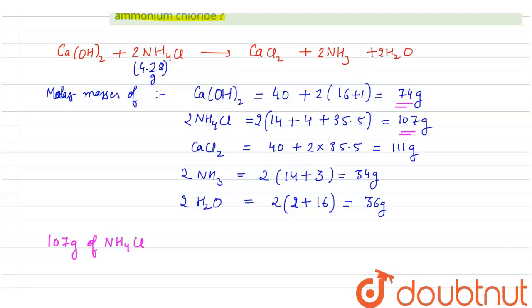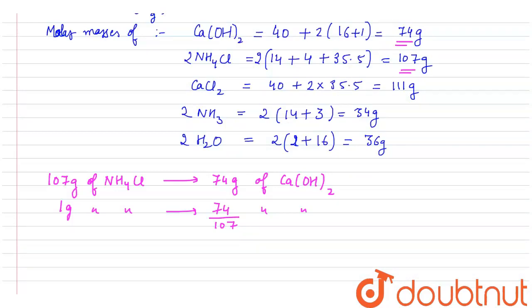So 1 gram of NH4Cl will be decomposed by 74 divided by 107 grams of calcium hydroxide, which after dividing comes out to be 0.691 grams of calcium hydroxide. Now it is asked that we have to calculate for 4.28 grams of NH4Cl.